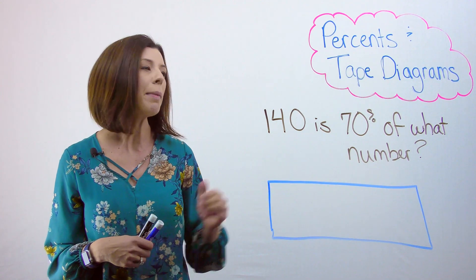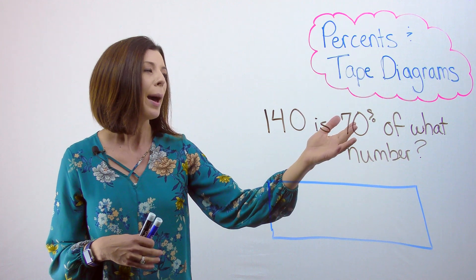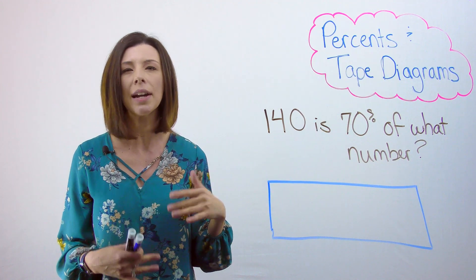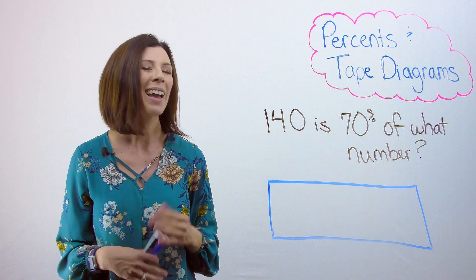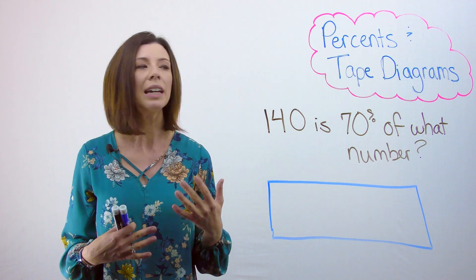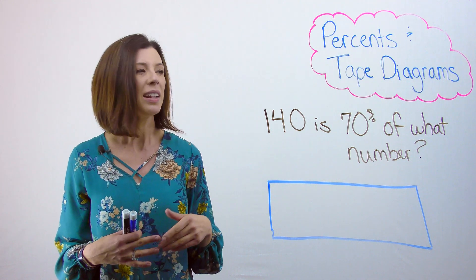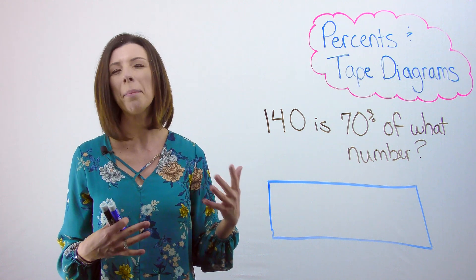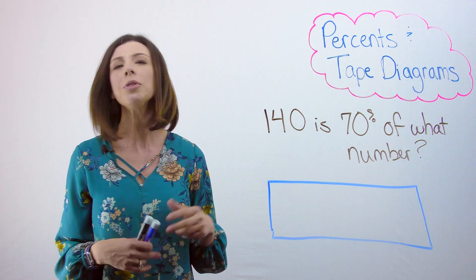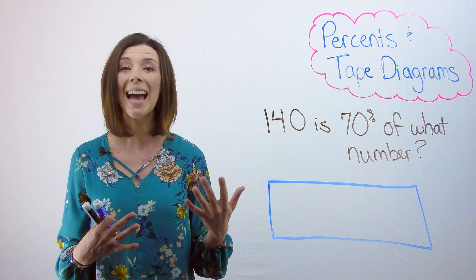Next, we want to think about our 70%, and sometimes we think about how many copies of 70% are in 100%. However, that's not really easy in this case, because there's going to be one copy and then a piece of a copy. So instead of doing it that way, let's try and break this up by tens.